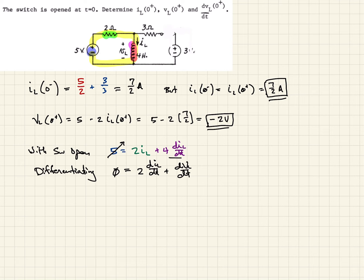So that being the case, we can set these two equal to each other. So we'll have DVL over DT, and this will be evaluated at 0 plus, which is what we're looking for. It should be equal to minus 2 DIL over DT, also at 0 plus.